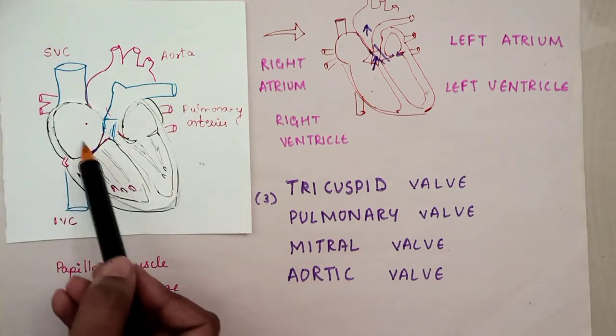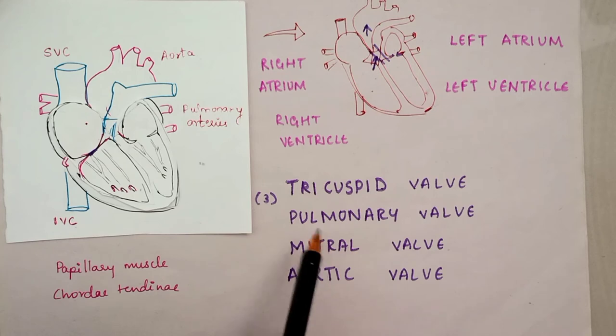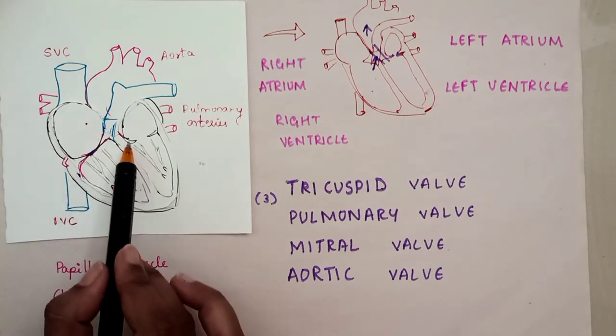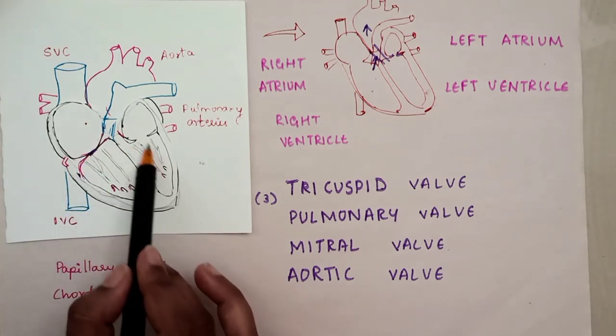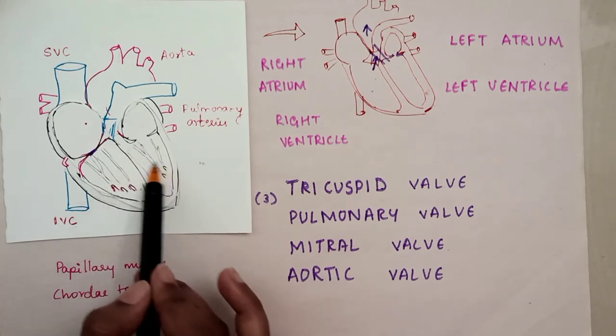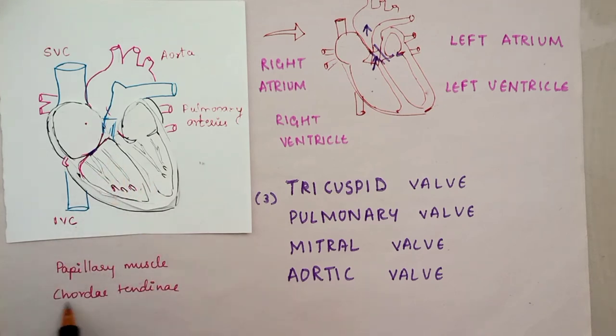The tricuspid and mitral valves are atrioventricular valves. These valves have flaps that are held by tendons called chordae tendineae and by small muscles inside the chambers called papillary muscles.